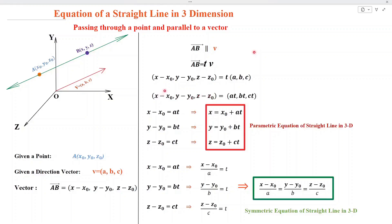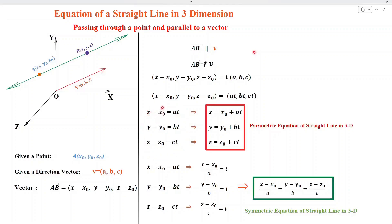Next, comparing components: from the first, we write x minus x0 equals a·t; from the second, y minus y0 equals b·t; from the third, z minus z0 equals c·t. Solving these three equations: x equals x0 plus a·t, y equals y0 plus b·t, and z equals z0 plus c·t. This is called the parametric form for the equation of a straight line in three-dimensional space.